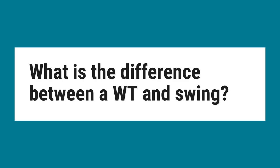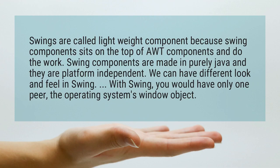What is the difference between AWT and Swing? Swing components are called lightweight because they sit on top of AWT components. Swing components are made in pure Java and are platform independent. We can have different look and feel in Swing. With Swing, you would have only one peer — the operating system's window object.